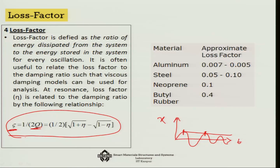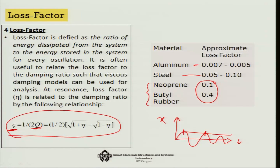For some materials, such as aluminium, the loss factor is much smaller compared to steel, which means steel dissipates more energy. Rubbers, which are generally used as damping materials, have an order of magnitude higher loss factor — which is why rubber or neoprene is used as a damping material rather than metals.